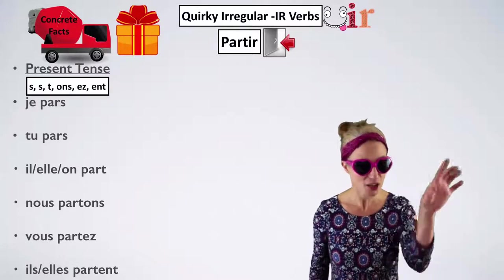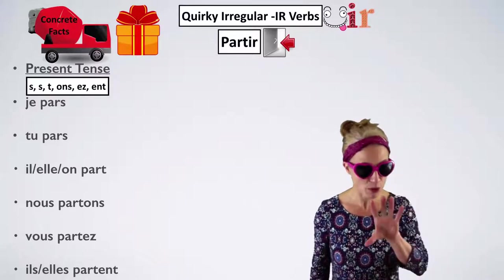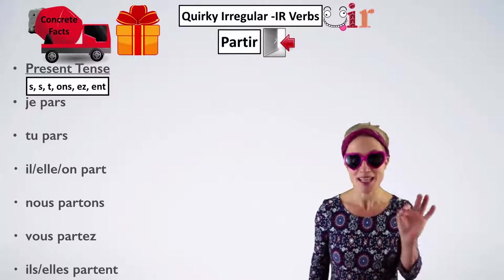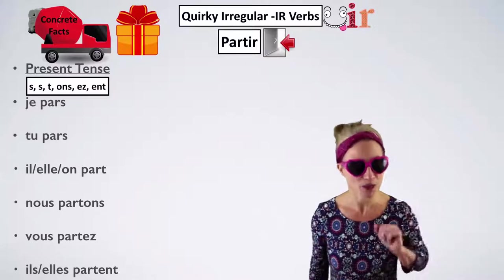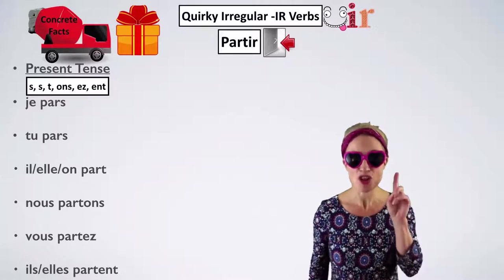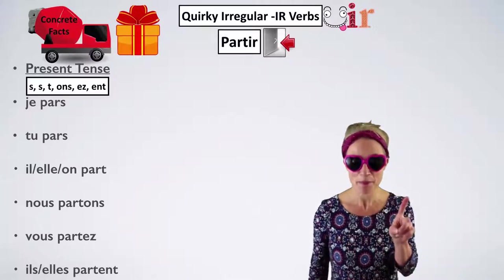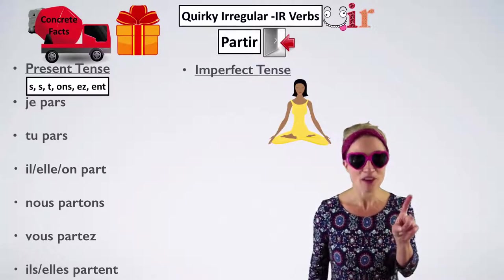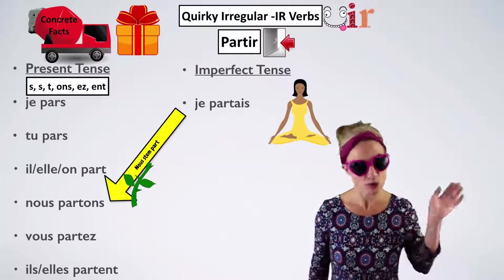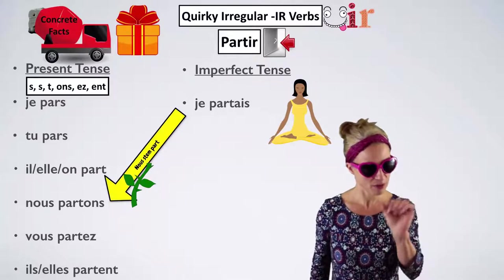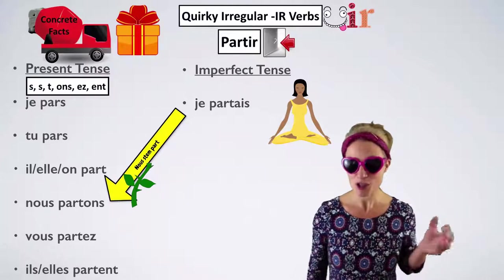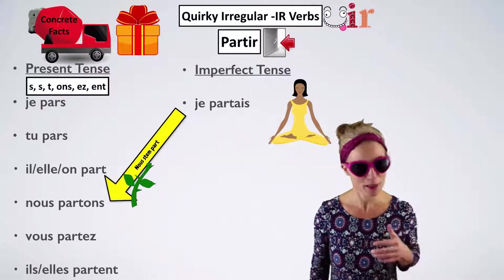The endings for this group in the present tense are: -S, -S, -T, -ONS, -EZ, -ENT. We know we need the nous stem to form the imperfect. So we take 'partons,' get rid of the -ONS, and we're left with the stem 'part-.' Then we add the ending -AIS for 'je.' Je partais.